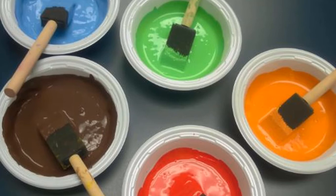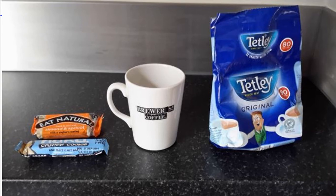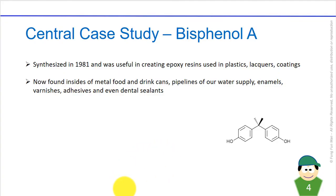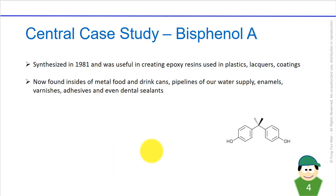These epoxy resins that contain BPA are used to coat the inner linings of metal food and drink cans because they are hydrophobic. They are also used as coatings for the inner piping of our water supply, as well as in varnishes, adhesives, glue, super glue, and AB glue — all these contain BPA. And in the past, it was even found in dental sealants in our teeth.